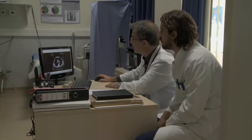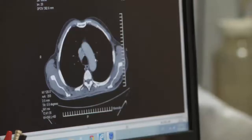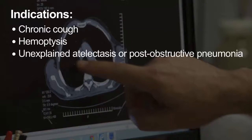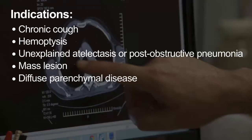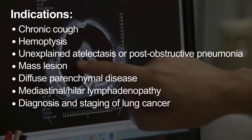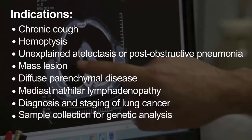The indications of flexible bronchoscopy are based on the ability of the bronchoscope to provide either diagnostic data or a therapeutic intervention. The most important indications are chronic cough, haemoptysis, unexplained atelectasis or post-obstructive pneumonia, radiological findings such as a mass lesion, diffuse parenchymal disease such as sarcoidosis, mediastinal hilar lymphadenopathy, diagnosis and staging of lung cancer, and sample collection for genetic analysis.